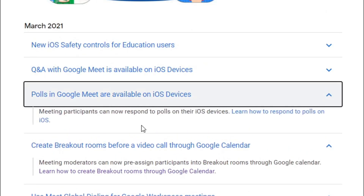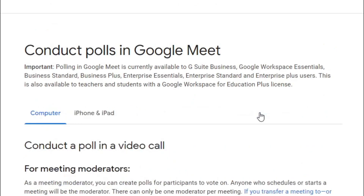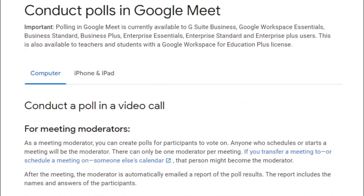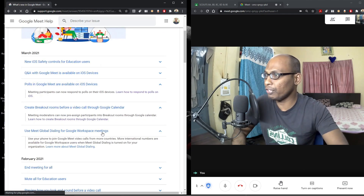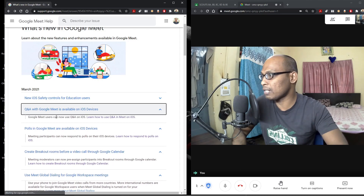Polls in Google Meet are now available on iOS devices — meeting participants can respond to polls on their iOS devices. You can ask questions and conduct polls using this feature. However, these features are currently rolled out only to G Suite Business, Google Workspace Essentials, Business Standard, Business Plus, Enterprise Essentials, Enterprise Standard, and Enterprise Plus users. It's also available to teachers and students with Google Workspace for Education Plus license, but Google will slowly roll it out to everybody.